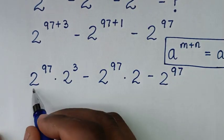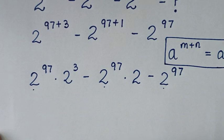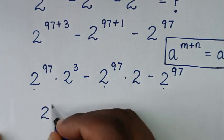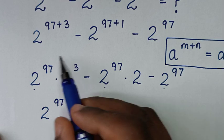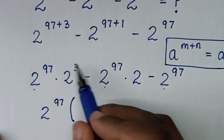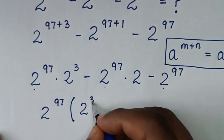Then in the next step, from here 2 power of 97 is common. So we will take 2 power of 97 out of bracket. Then this divided by this gives 2 power of 3.